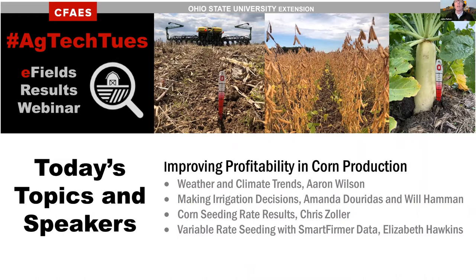We have four topics for the day really focused on improving profitability in corn production: weather and climate trends, some irrigation ideas, corn seeding rate results — we get a lot of questions on that — and then variable seeding based on SmartFirmer data. With that, I want to welcome Erin Wilson, who is pretty well known for his background in weather and climate. He works both for Extension and at Byrd Polar as a state specialist.